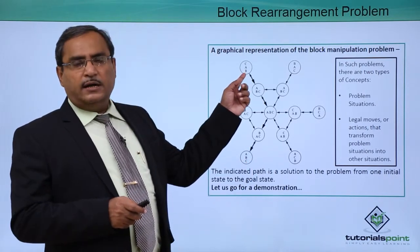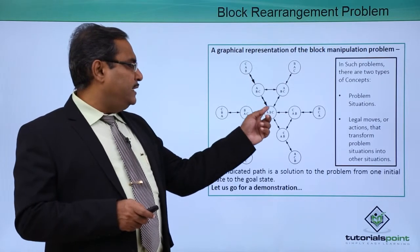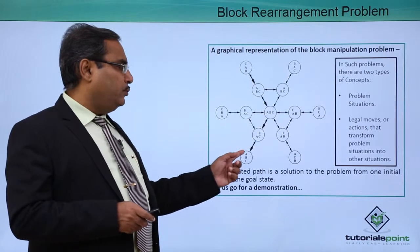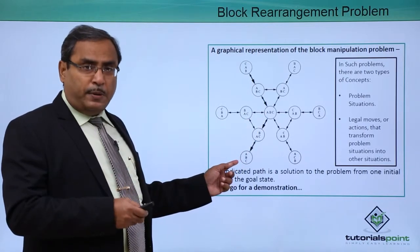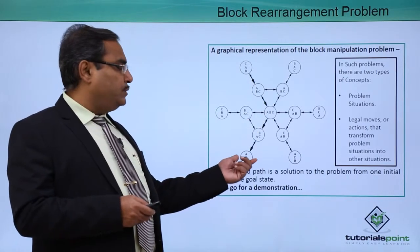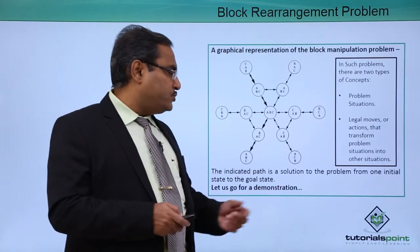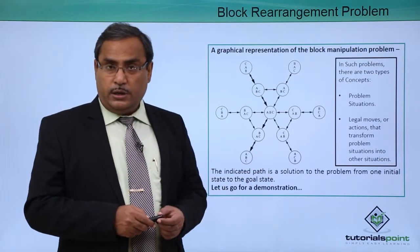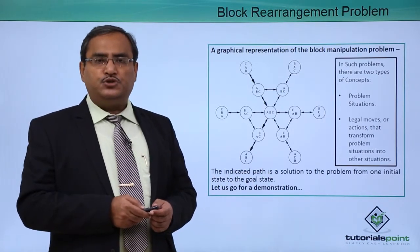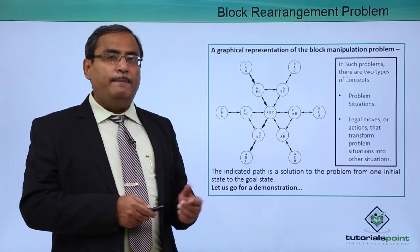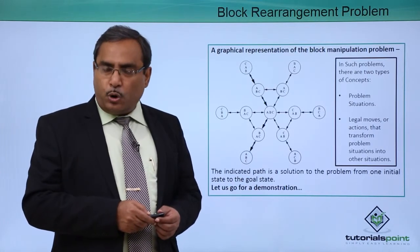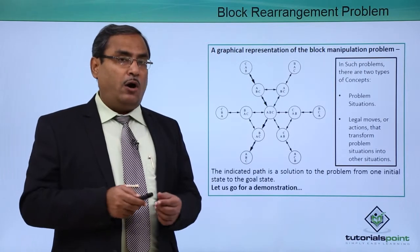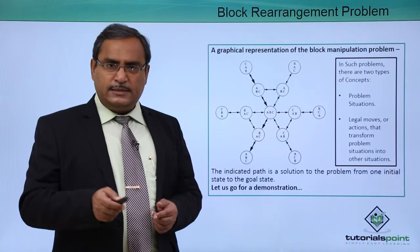If we consider the initial state, this is the respective path shown in bold. This is the path through which we should make our transitions to reach the goal state. The indicated path is the solution to the problem from the initial state to the goal state. Now let us go for a practical demonstration of this problem where we shall implement it in Prolog coding and show how the code executes and how the outputs are obtained.